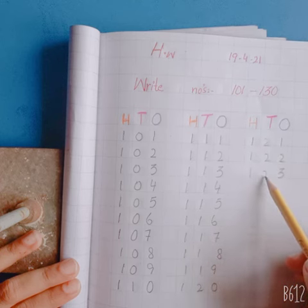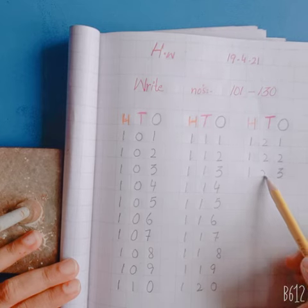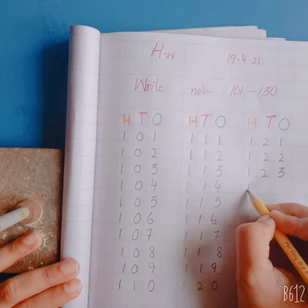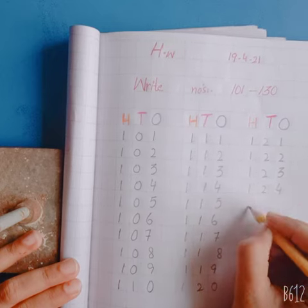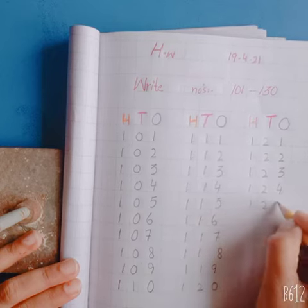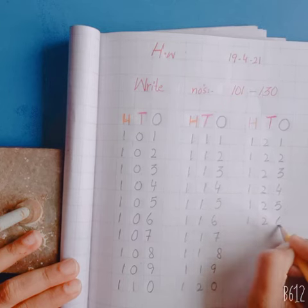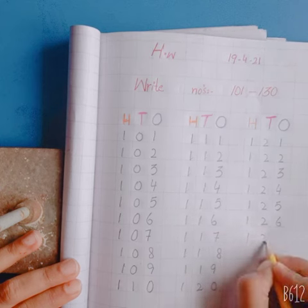How many tens in 123? Two tens in 123 and three ones. 124, 125, 126, 127.